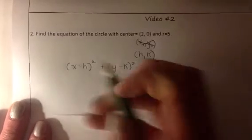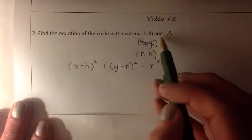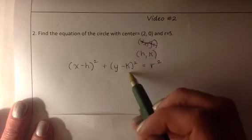So in order to find the equation of the circle with center point (2, 0) and radius 5, we'll simply substitute these values into our equation.